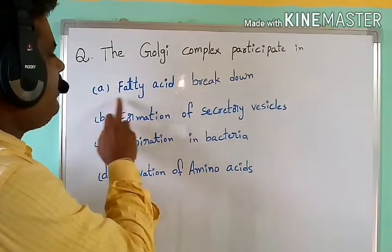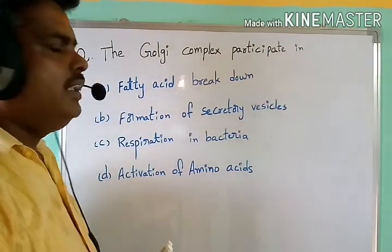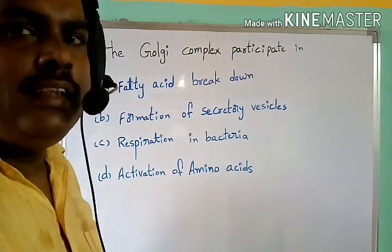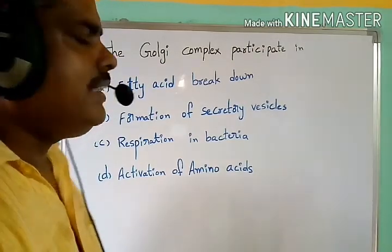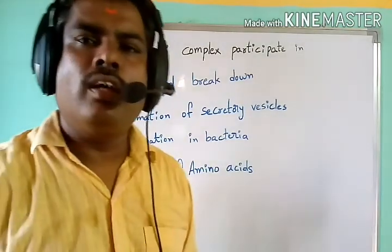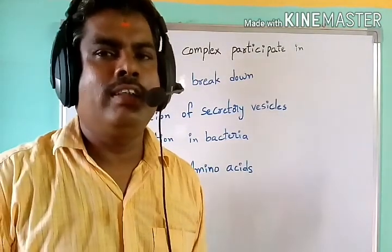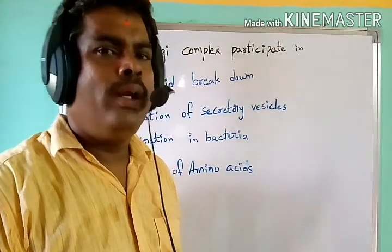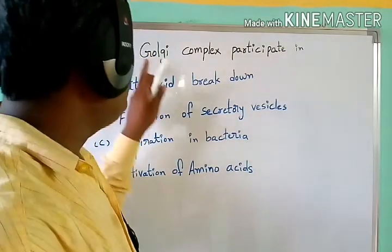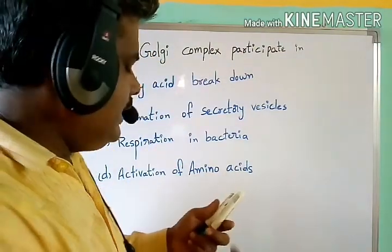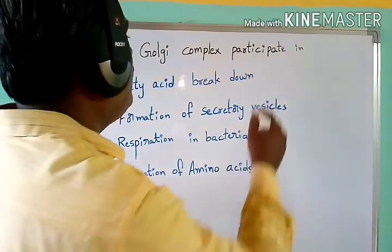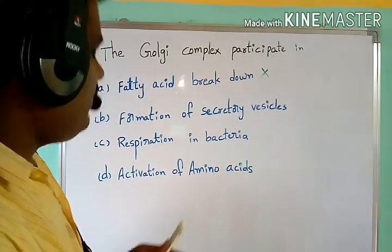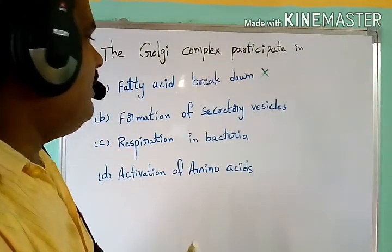Option A: fatty acid breakdown. The fatty acid breakdown takes place inside the mitochondria and peroxisomes, so the Golgi complex plays no role here. This is not a correct statement. Option B: formation of secretory vesicles.